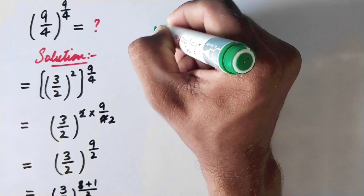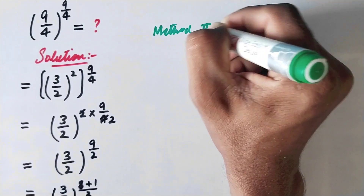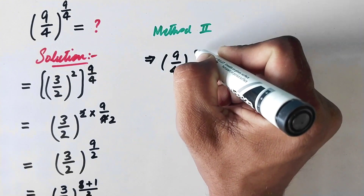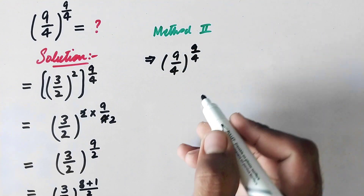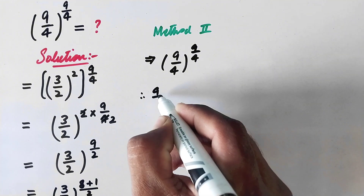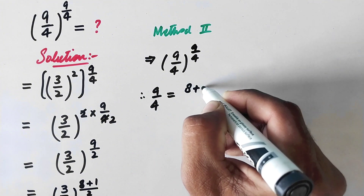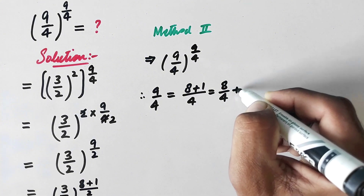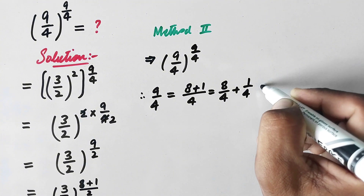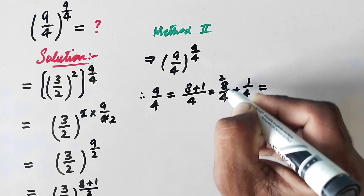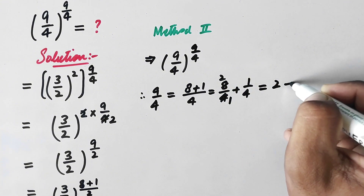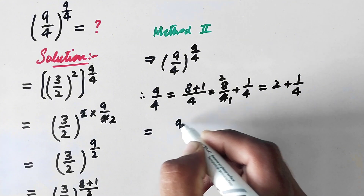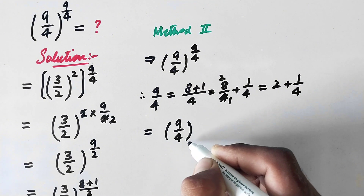So here is method 2. We will write it as 9 over 4 to power 9 over 4, and we can split this 9 over 4 exponent as 8 plus 1 over 4, which will be equal to 8 over 4 plus 1 over 4. That will be equal to 2 plus 1 over 4.